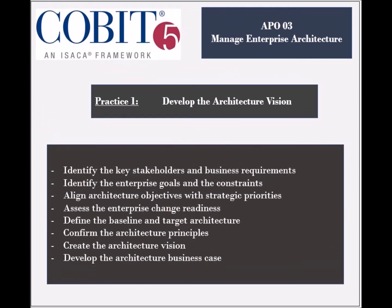The activities involved in this practice include identifying the key stakeholder requirements that need to be addressed by the architecture, and identifying the enterprise strategic goals and the constraints that are hindering their achievement. The architecture objectives should then be aligned with the strategic requirements priorities. The enterprise's readiness for change should be assessed and the required capabilities should be identified. The scope of the architecture should be defined, which includes the baseline and target architectures.